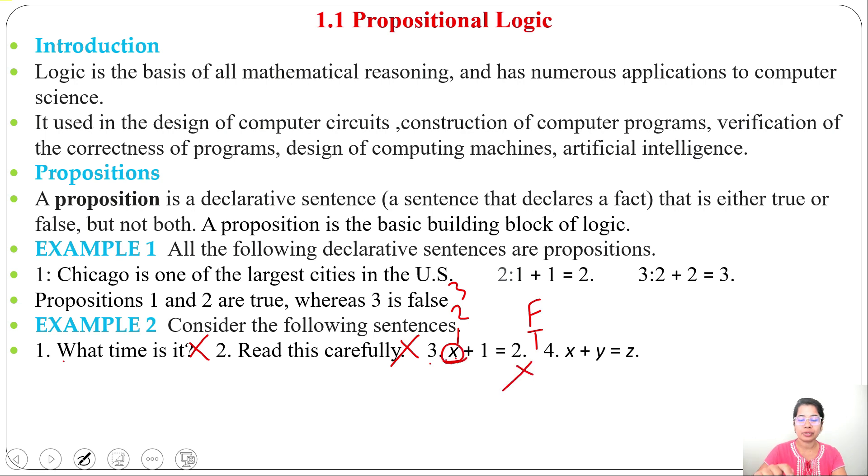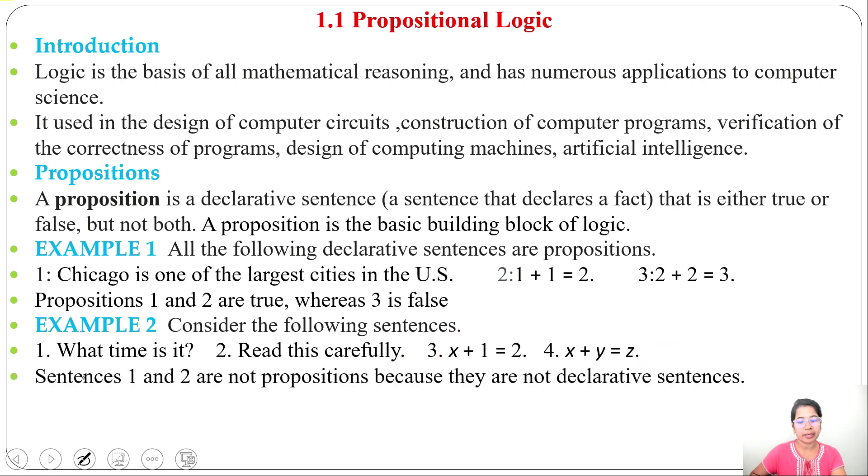For a proposition, it should be either true or false. We cannot say true or false when it depends on x. Fourth example: x+y=z. Here also, we use variables, so this is not a proposition. Sentences 1 and 2 are not propositions as they are not declarative, and sentences 3 and 4 are not propositions as they use variables, so they are neither true nor false. But we can convert sentences 3 and 4 to propositions by putting some value in place of the variable.